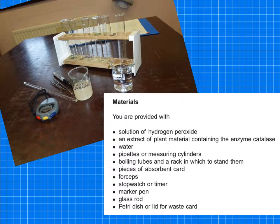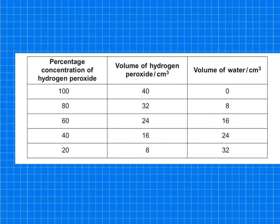Now the students then were asked to work out the percentage concentration of hydrogen peroxide. So they were given a stock solution of hydrogen peroxide and then they did a serial dilution. So here's the percentage concentrations and the volume of hydrogen peroxide compared to the volume of water to make up five boiling tubes each containing 40 centimeters cubed.